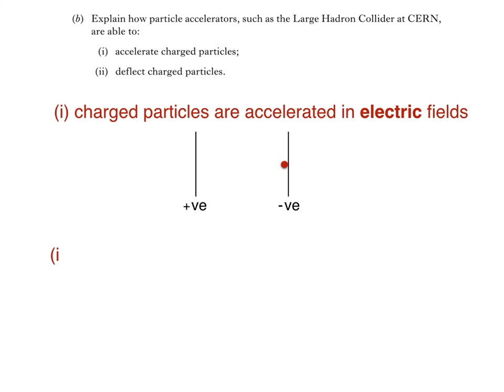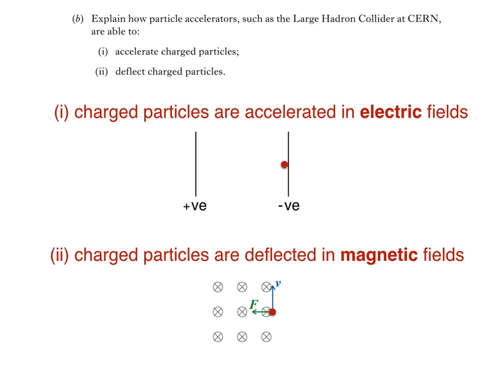For part 2, magnetic fields are used to deflect charged particles. The blue arrow represents the velocity vector of the particle, which is again positively charged. And the green arrow indicates the direction of the force experienced by the particle. With the magnetic field into the paper, as indicated, the positively charged particle would move in a circle in an anti-clockwise direction.